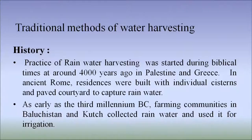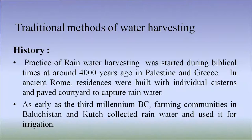We will now discuss traditional methods of water harvesting. The practice of rainwater harvesting was started during Biblical times, around 4000 years ago, in Palestine and Greece. In ancient Rome, residences were built with individual cisterns and paved courtyards to capture rainwater. As early as the 3rd millennium BC, farming communities in Baluchistan and Kutch collected rainwater and used it for irrigation.